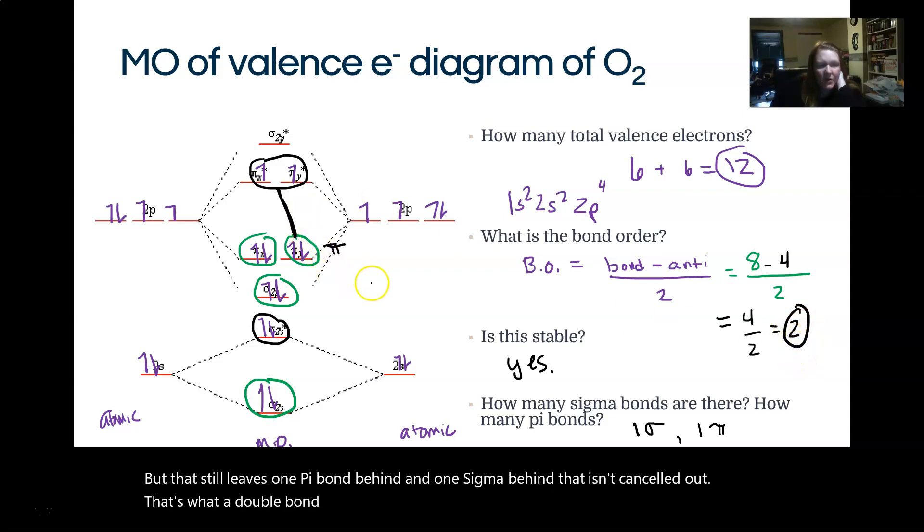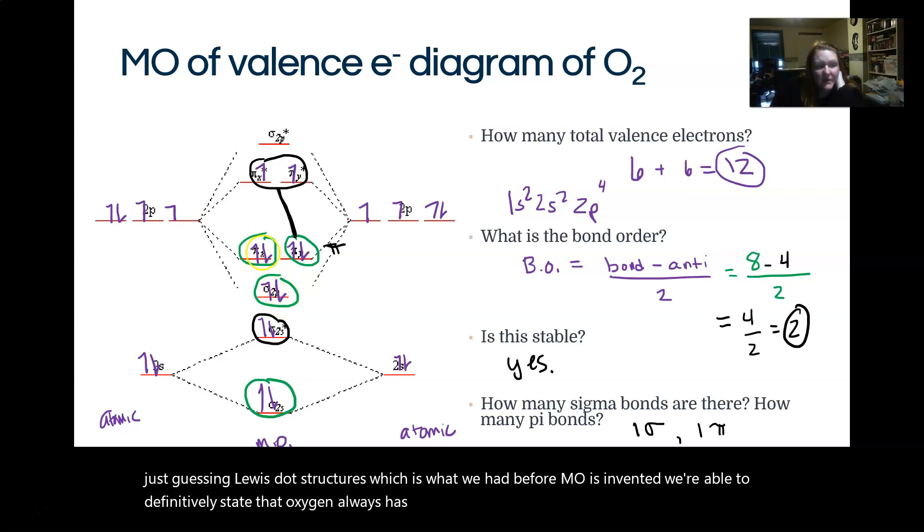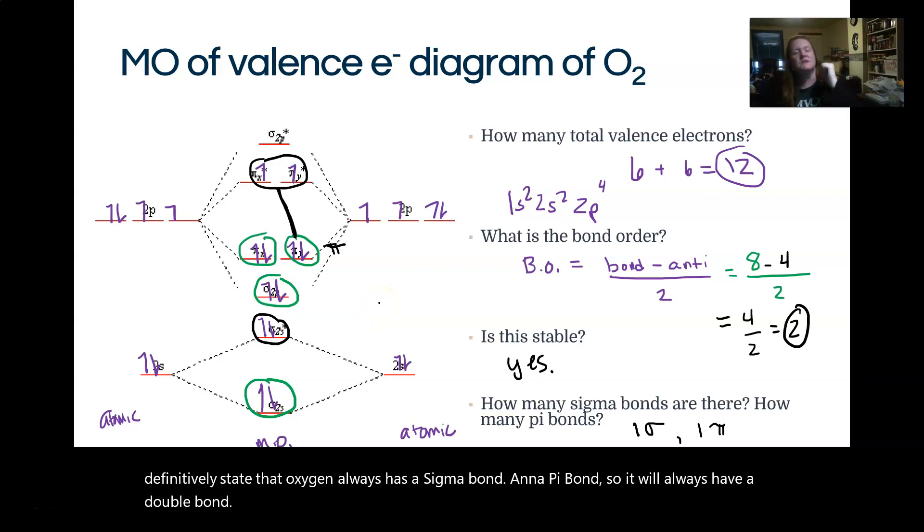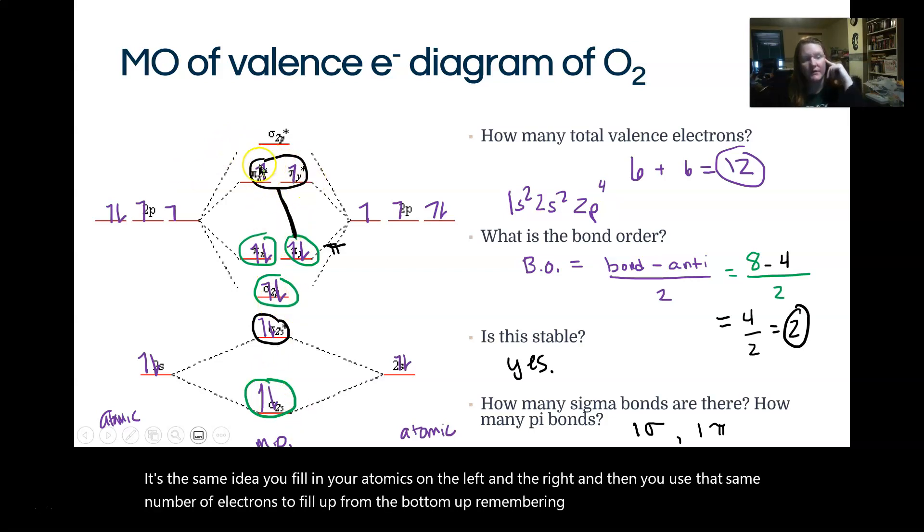So molecular orbital theory is beautiful because instead of just guessing Lewis dot structures, which is what we had before MO was invented, we are able to definitively state that oxygen always has a sigma bond and a pi bond. So it will always have a double bond. You can use this for any diatomic molecule. So O2, N2, H2, all of those, C2, any of them. It's the same idea. You fill in your atomics on the left and the right and then you use that same number of electrons to fill up from the bottom up, remembering that electrons will separate when they can.